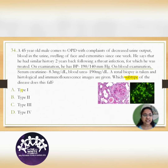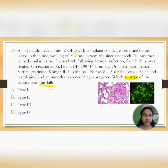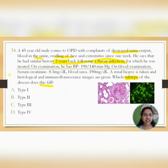They have asked which subtype of one particular diagnosis this falls under. A 45-year-old male comes to OPD complaining of decreased urine output, blood in the urine, and swelling of the face and extremities since one week. He had a similar history two years back following a throat infection for which he was treated. His BP is elevated with increased serum creatinine and blood urea levels.